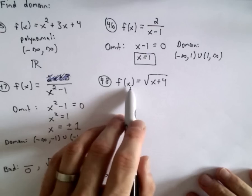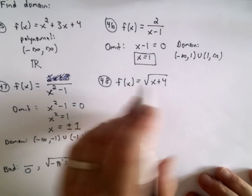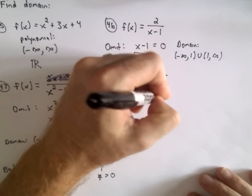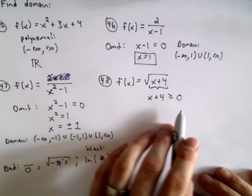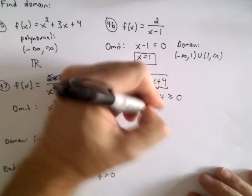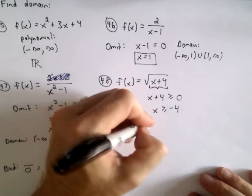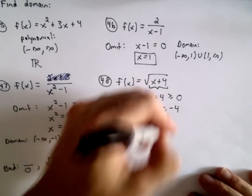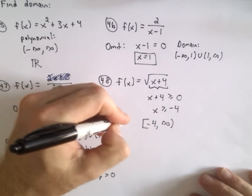Last but not least, we have f of x equals the square root of x plus 4. Again, we want the quantity underneath the radical to be greater than or equal to 0. So I've got my inequality x plus 4 greater than or equal to 0, and that'll simply say that x has to be greater than or equal to negative 4. So my domain will be from negative 4, we'll use brackets there, out to positive infinity. And again, that's going to be my domain.